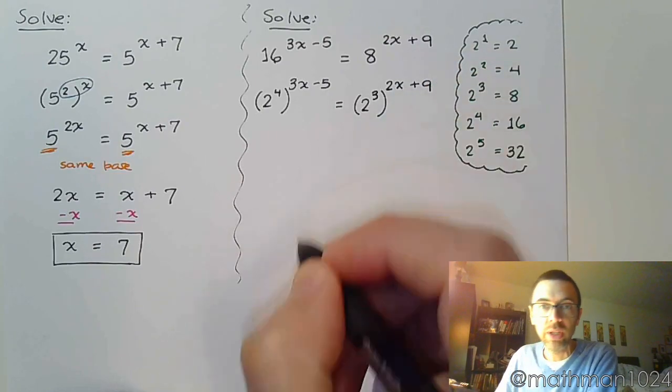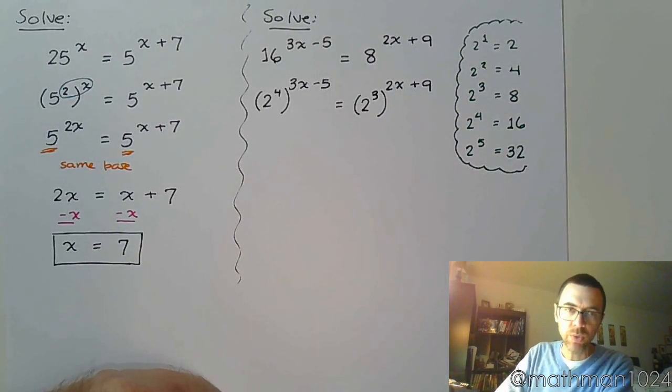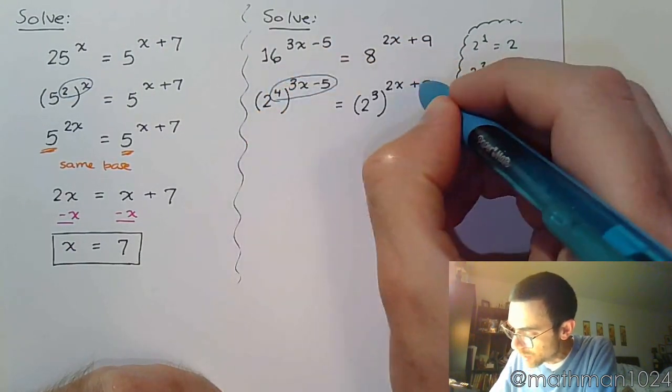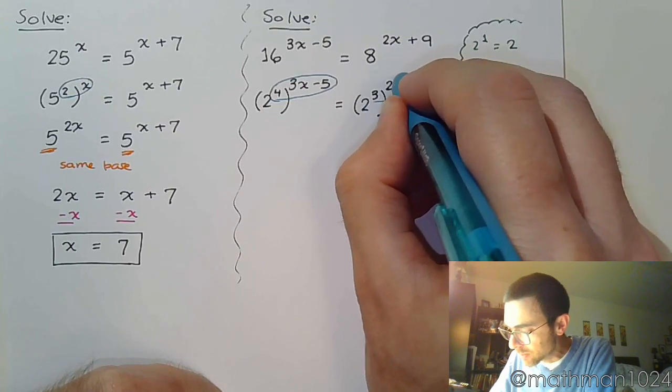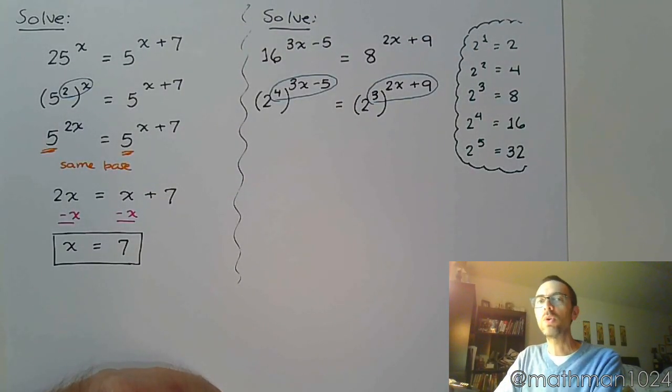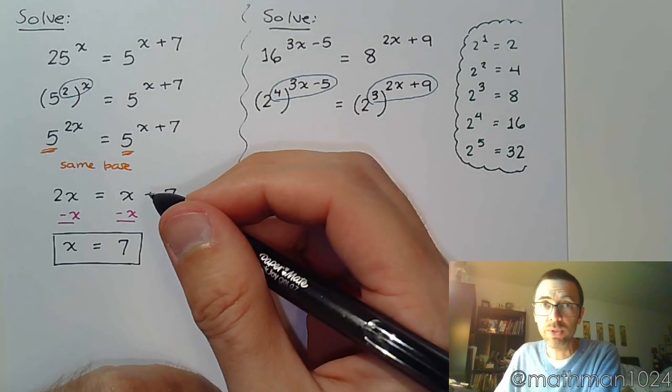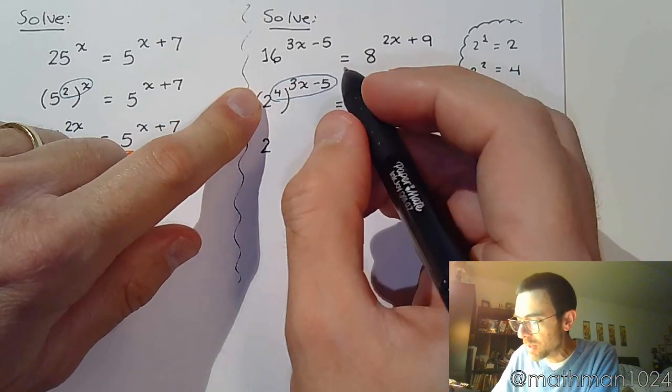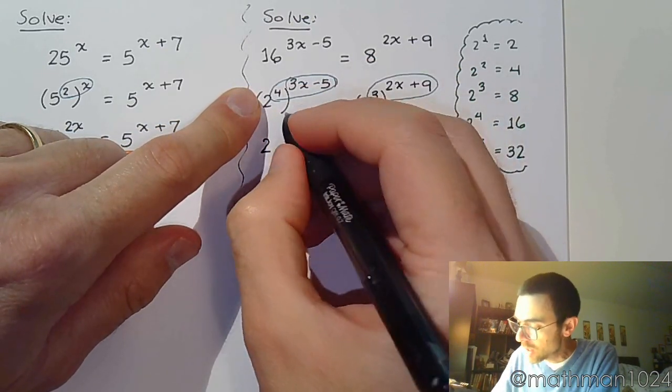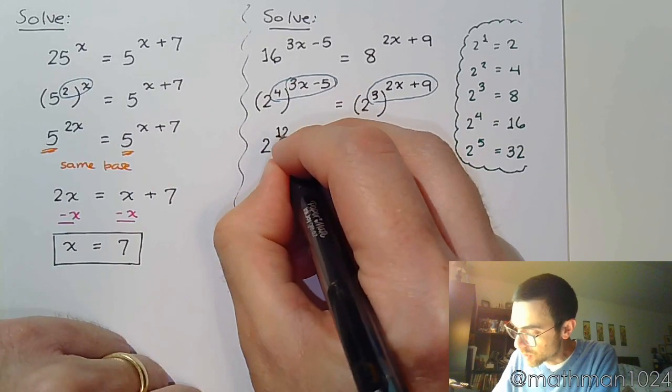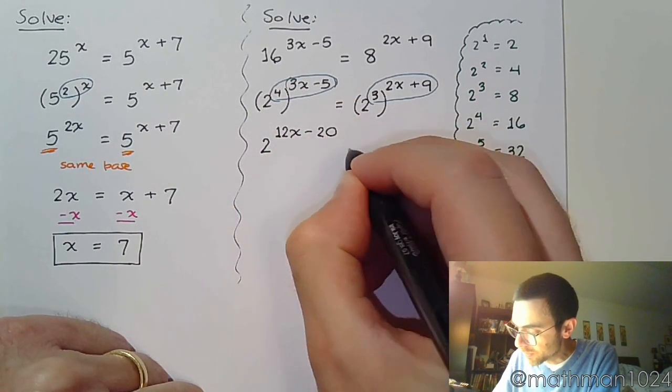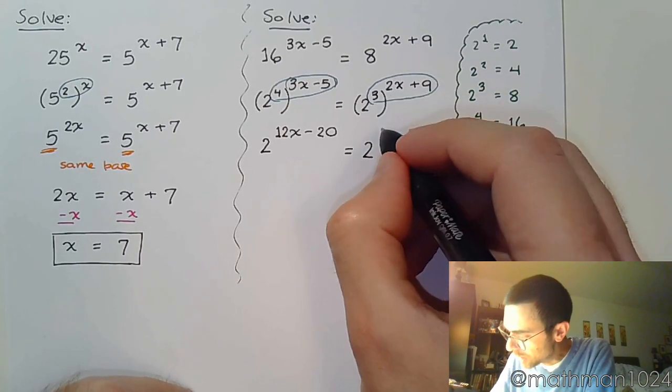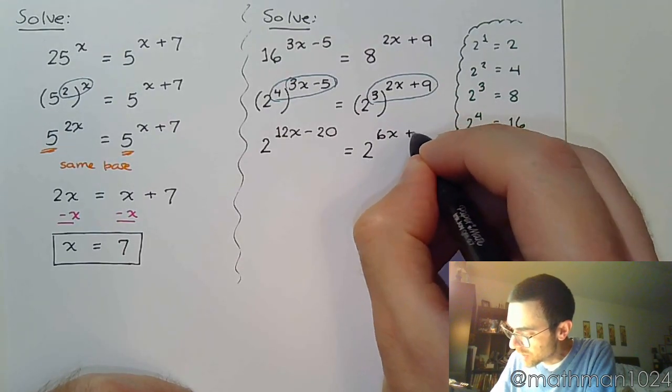As we showed in the last problem, when you have a power raised to a power, you multiply those guys using the properties of exponents. So the base is 2, and 4 times (3x-5) becomes 2^(12x-20). On the other side we have 2, and distribute the 3: 3 times 2x is 6x, 3 times 9 is 27.